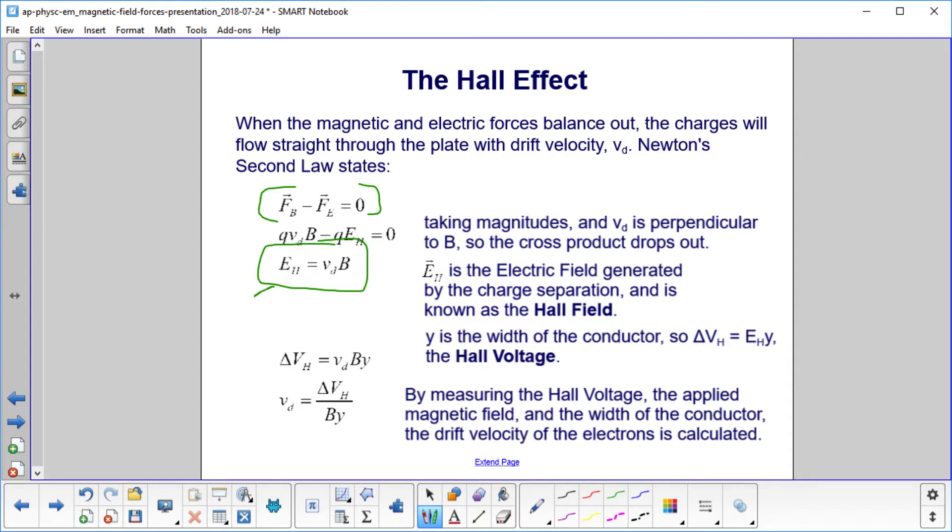The charges are just going straight through that rectangular slab. Y is the width of the conductor, so delta V, the potential difference, is equal to the electric field times Y. That is the Hall voltage. We find our drift velocity is equal to the Hall voltage divided by the magnetic field times the width of our plate. This is a direct way to measure the drift velocity because you can measure the voltage, the magnetic field, and Y.